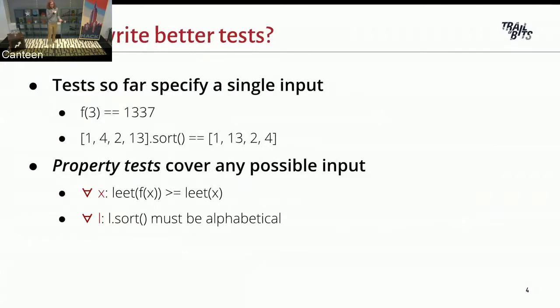So let's ask, how could we be better? And the answer is, we can generalize on the input. Normally when I test, we pick one input to these functions and that's the thing we test. So I'm testing my function f, and I test it with the input 3, and I say that when the input is 3, my output is 1337. Or I'm testing my sort function. And when it says 1, 4, 2, 13, and I sort that, I get out 1, 13, 2, 4. Bonus points if you recognize what sort function that is.